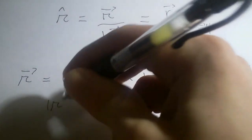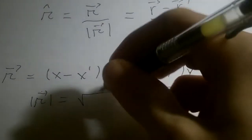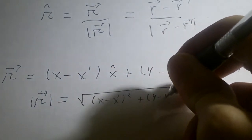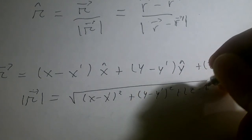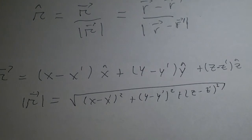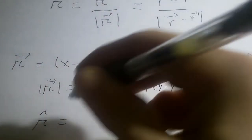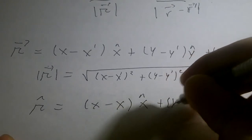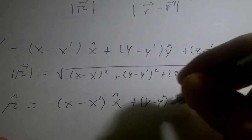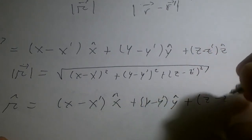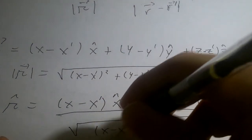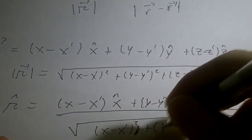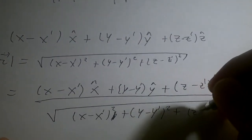The length of script r is the Pythagorean theorem: the square root of (x minus x prime) squared plus (y minus y prime) squared plus (z minus z prime) squared. And the unit vector r-hat of the separation vector is (x minus x prime) x-hat plus (y minus y prime) y-hat plus (z minus z prime) z-hat, all over the square root of (x minus x prime) squared plus (y minus y prime) squared plus (z minus z prime) squared.